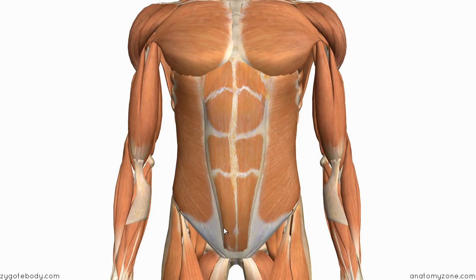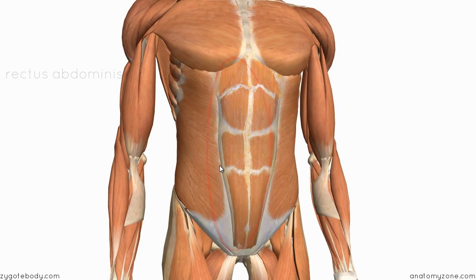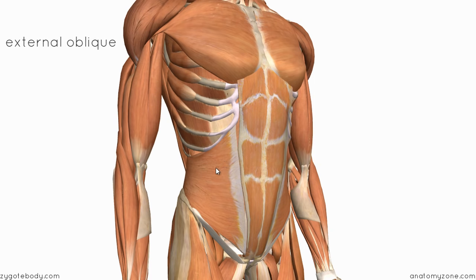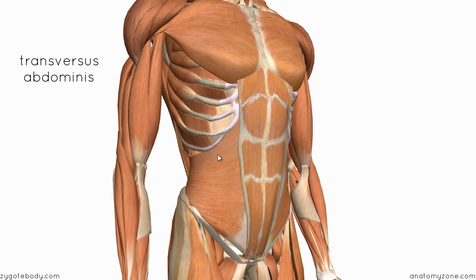Right in the middle we've got the rectus abdominis muscle. Laterally, on the side, we've got three different muscles. Superficially, we've got the external oblique with its fibers oriented inferomedially. Underneath that is the internal oblique, with the majority of its fibers oriented superomedially. And then underneath this we've got the transversus abdominis with its horizontally oriented fibers.